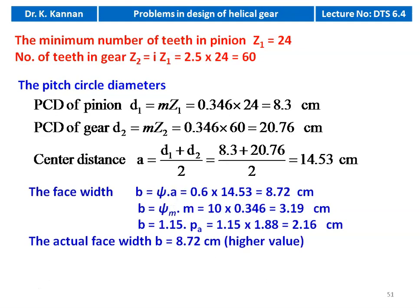We calculate the face width using three equations: B = psi × A = 0.6 × 14.53 = 8.72 cm; B = psi_m × m = 10 × 0.346 = 3.46 cm (noted as 3.19 cm in calculation); B = 1.15 × axial pitch = 1.15 × 1.88 = 2.16 cm. We take the highest value: face width B = 8.72 cm.